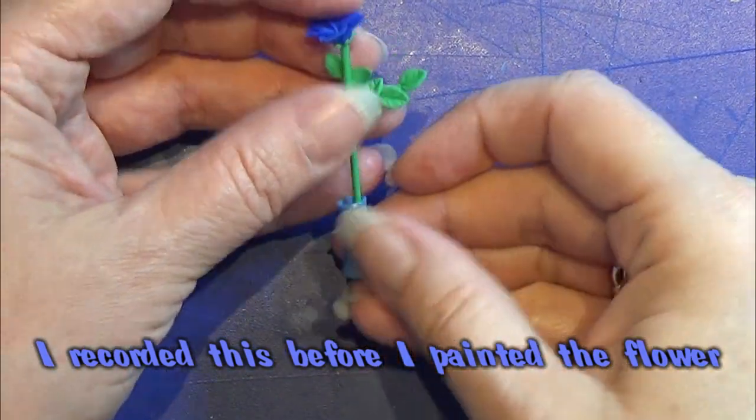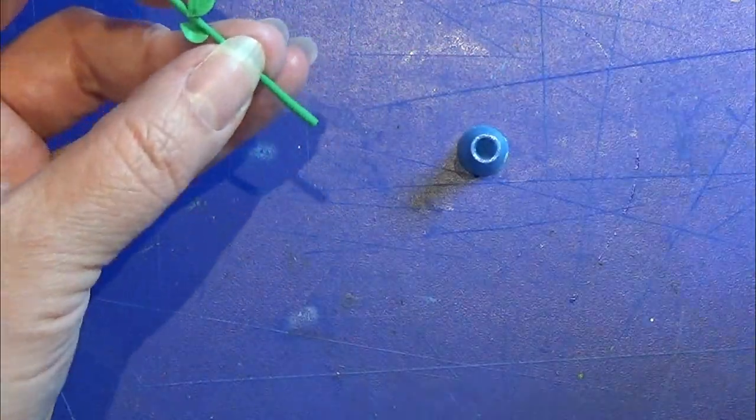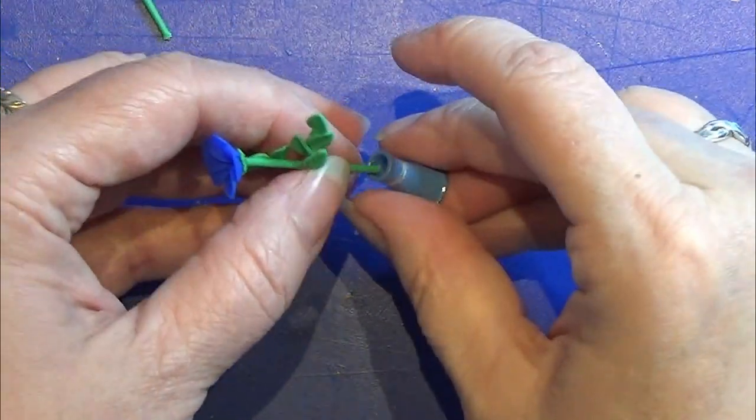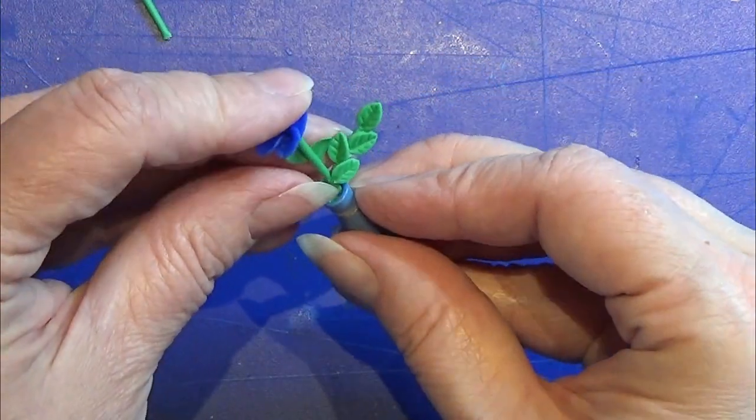My stem was a little too long for the vase so I took my plier and cut it off. Now I just glue it into this little vase and it is all done.